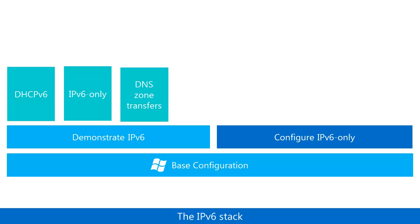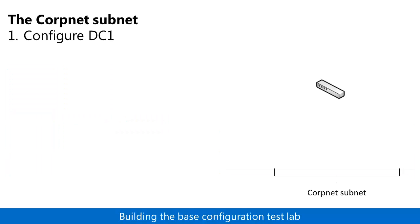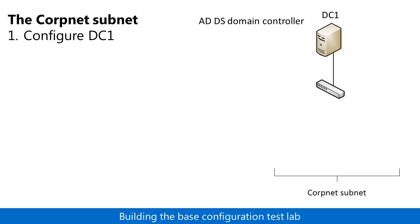Now let's build out the Base Configuration. The Base Configuration Test Lab consists of two subnets, one named CorpNet and one named Internet. You start with the CorpNet subnet and add the computer named DC1, then configure it as an Active Directory Domain Services, or AD DS, Domain Controller for the corp.contoso.com domain.